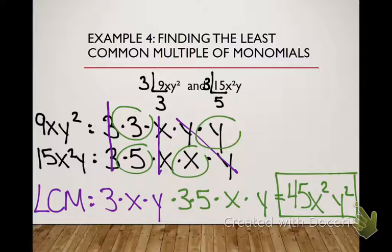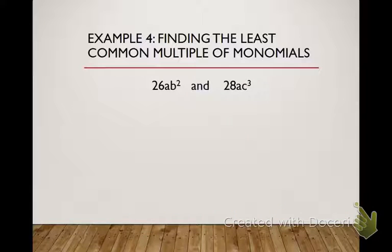All right? Now, in the second one, let's see here. Where did it go? Example 4. In the second one, we have 26AB squared and 28AC to the third. We're going to factor each one of these monomials and try to find both the GCF and the LCM.